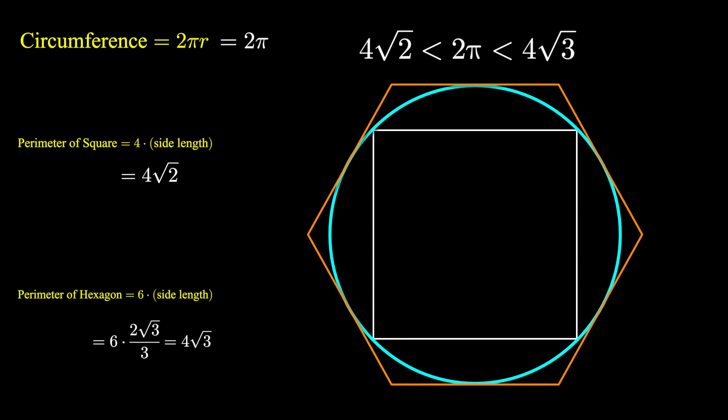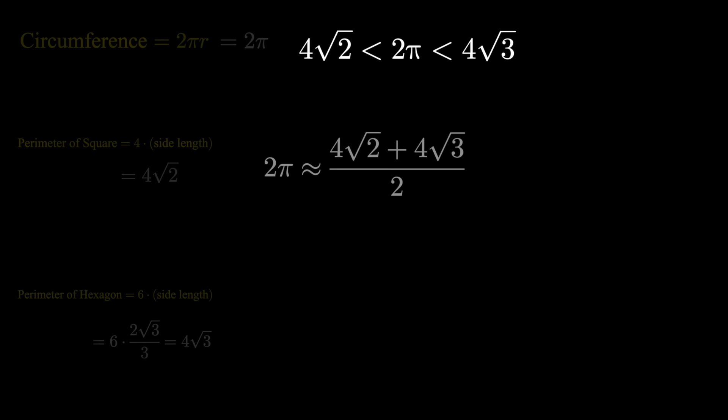A better approximation would be their average. If we were to average the perimeters of the square and the hexagon, that should be a pretty good approximation for the circumference of the circle. So 2 pi is approximately the average between 4 root 2 plus 4 root 3, which is 2 times root 2 plus root 3.